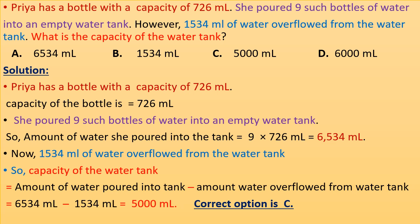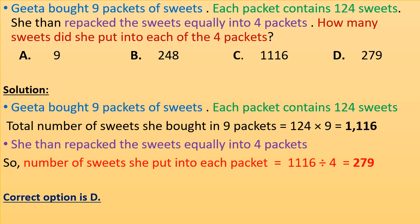Correct option is C. The next question is: Geetha bought 9 packets of sweets. Each packet contains 124 sweets. She then repacked the sweets equally into 4 packets. How many sweets did she put into each of the 4 packets? Now, highlight the given information first, and we will start solving the question step by step.